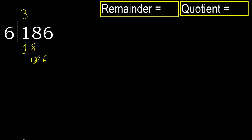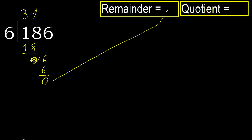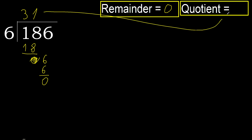Eliminate 0 on this side. 6. 6 multiplied by 1 is 6 — 6 is not greater. 6 minus 6 is 0. Next, there is no number remaining, therefore finish it. Okay.